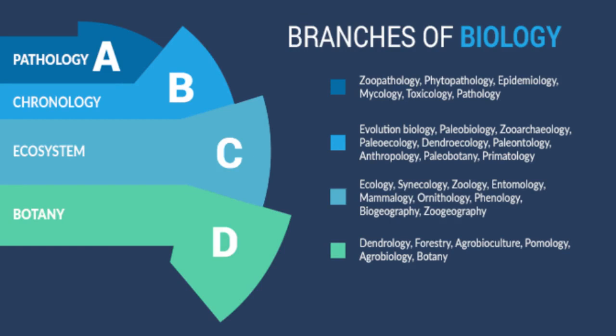It involves the fields of pathology, chronology, ecosystem and botany. Pathology enhances our understanding of diseases and fungi. It also answers how living organisms are affected, treated and diagnosed by poisonous substances. Chronology talks about the aspects of time — understanding how living things change over time and how life originated. Ecology talks about how organisms relate to each other in their physical environment, including distribution and population dynamics. And lastly, botany enables us to identify how plants are classified, grow and are managed in nature.